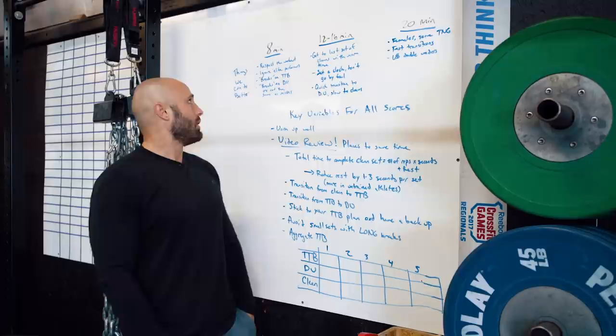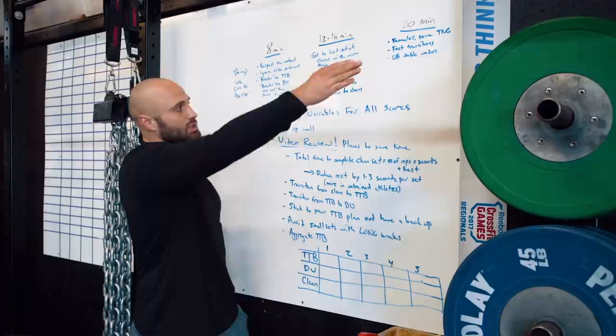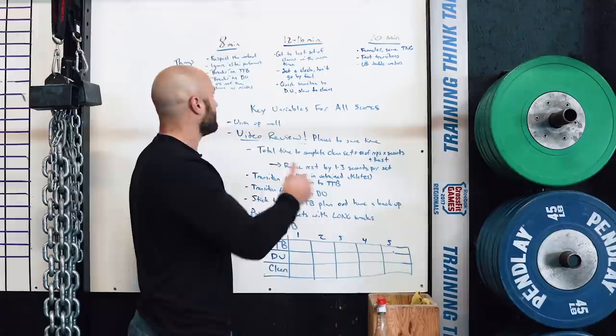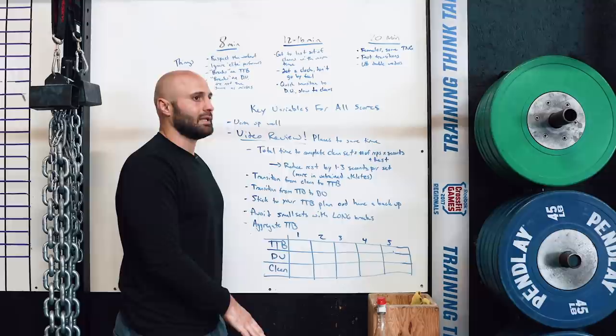Those are the things that could be done better from a big-picture perspective in each of the different categories. Now, key variables for all scores — whether you're finishing two rounds or five rounds, everything I'm going to lay out here from a second-thoughts perspective is going to be applicable.